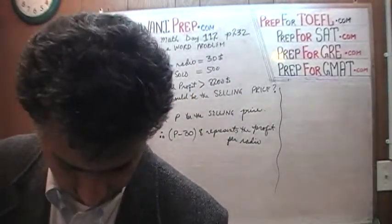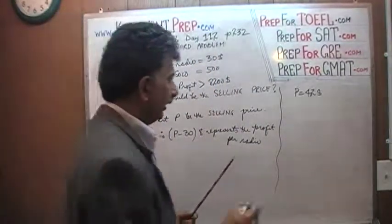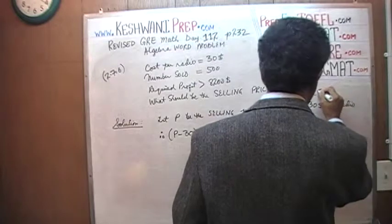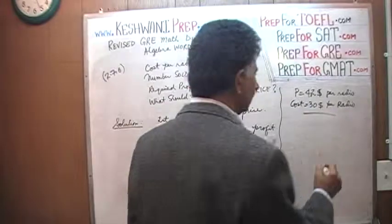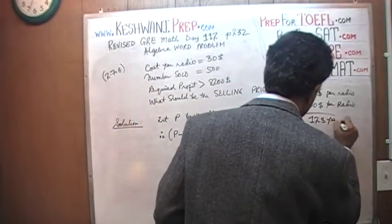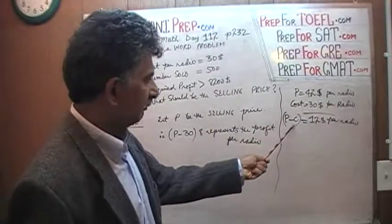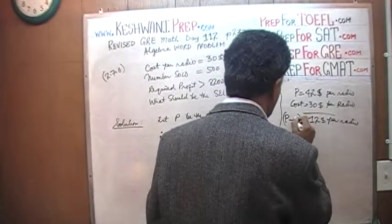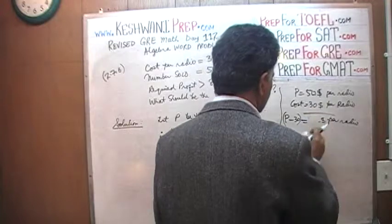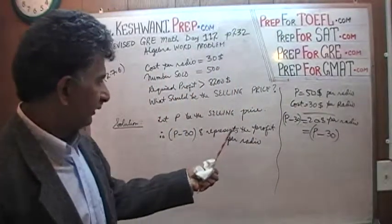For example, if P happens to be $42 — if you're selling it for $42 — and the cost is $30 per radio, then you must make a profit of $12 per radio, which is P minus the cost: P minus $30. If P happens to be $50, then the profit is going to be $20 per radio, which is the same — your price minus the cost. So P minus 30 represents the profit per radio.